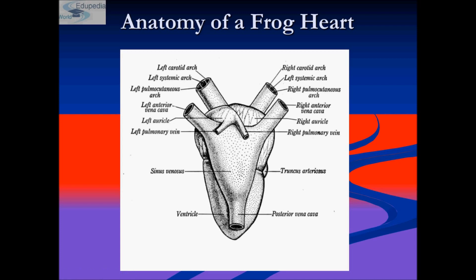Looking at the diagram of the frog's circulatory system, you will notice that the frog's heart is different from the human heart. The frog's heart has two auricles and a single ventricle, making a total of three chambers, unlike the human heart which has two auricles and two ventricles. The deoxygenated blood is sent to the auricle from various organs in the frog's body through blood vessels and veins.